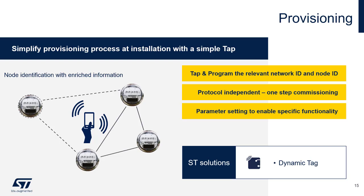NFC in a product could be used to automate and eliminate errors when installing and commissioning different nodes or meters. A field technician, simply with an app on their phone or tablet, could tap a meter to be installed and correctly program in the relevant network ID and node ID. NFC is designed to complement many wireless protocols.